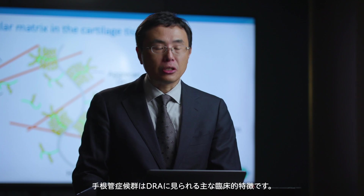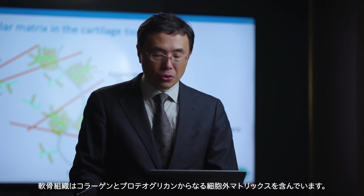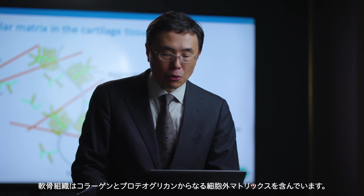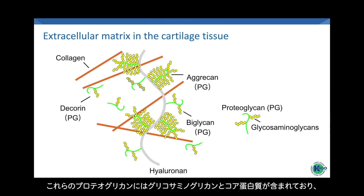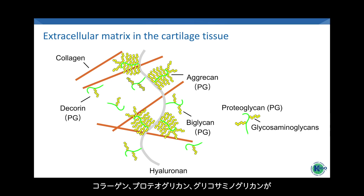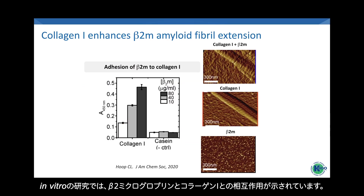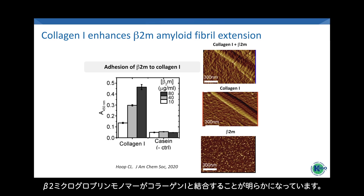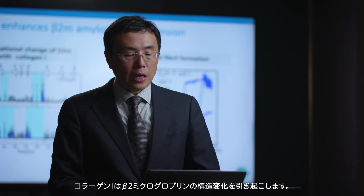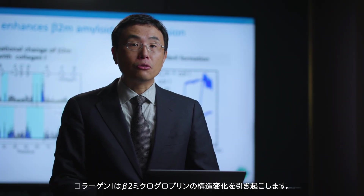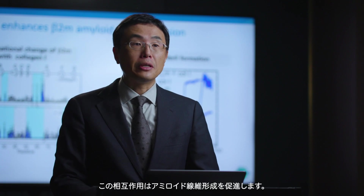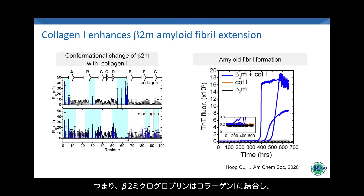Carpal tunnel syndrome is a major clinical feature of DRA. Cartilage tissues contain an extracellular matrix made up of collagen and proteoglycans. These proteoglycans include glycosaminoglycans and core proteins. It is possible that collagen, proteoglycans, and glycosaminoglycans are involved in amyloidogenesis. In vitro studies have shown that beta-2-m can interact with collagen-1. Atomic force microscopy reveals that beta-2-m monomer binds to collagen-1, which can change the conformation of beta-2-m, enhancing amyloid fibril formation. Thus, beta-2-m binds to collagen-1, altering its conformation and promoting amyloid fibril formation.